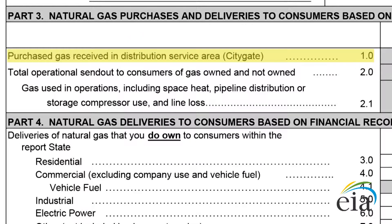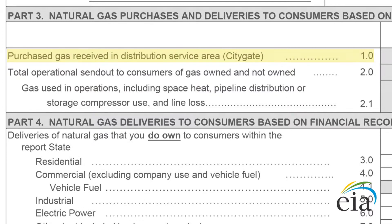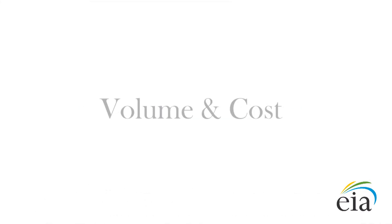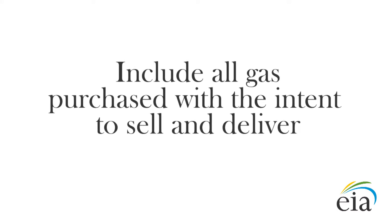Line 1 asks for the purchased gas received in your distribution service area. Your distribution service area is also known as CityGate. This line requires you to report both volume and cost. When you report volumes in this section, please include all gas your company purchased with the intent to sell and deliver to its customers.